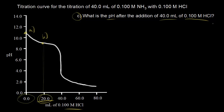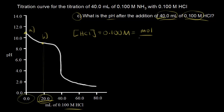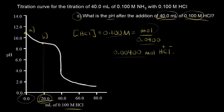So how many moles of acid did we add? The concentration of HCl is 0.1 molar, and molarity is moles over liters. We added 40 milliliters, which is 0.04 liters. So the moles of HCl equals 0.1 times 0.04, which equals 0.004 moles of HCl. You could think of this as 0.004 moles of H⁺, or equivalently 0.004 moles of H₃O⁺.